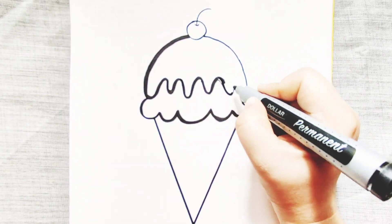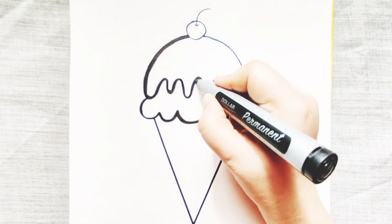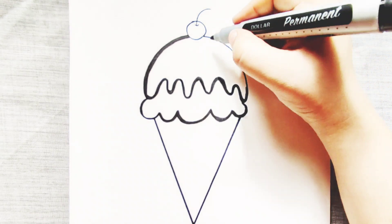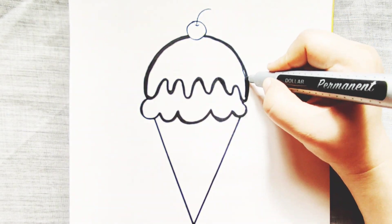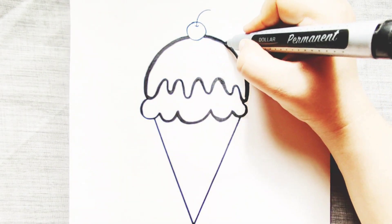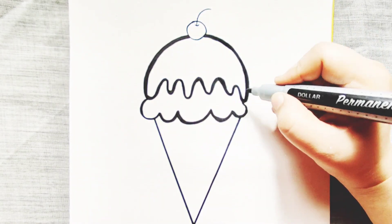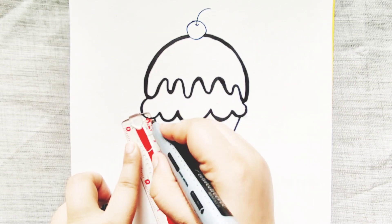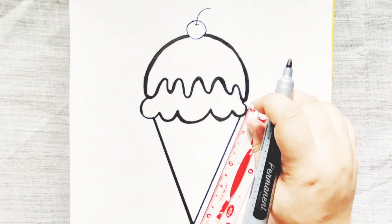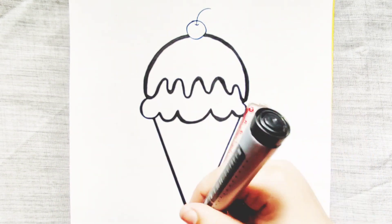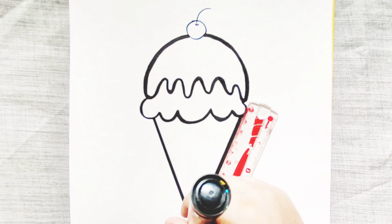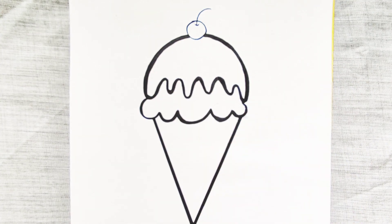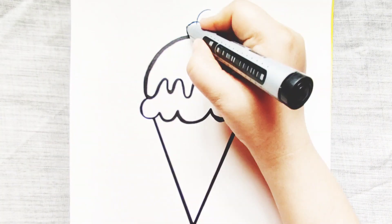A tisket, a tasket, a green and yellow basket. I wrote a letter to my love and on the way I dropped it, I dropped it, and on the way I dropped it. A little boy he picked it up and put it in his pocket.